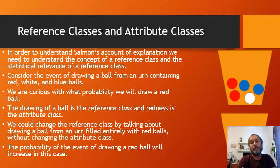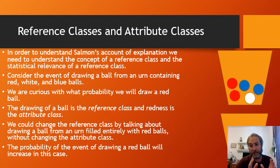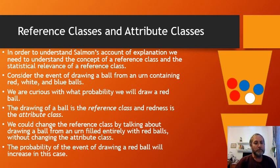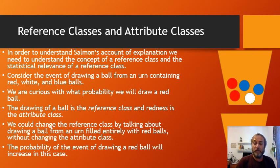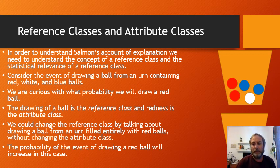Importantly, if we approach explanation through probability theory rather than argument structure, we need to be clear about our total body of evidence. That total body cannot contain either the explanandum or the explanans, because what we want to do is compare the probability before and after: we add the explanans and check whether the probability of the explanandum is increased.